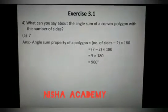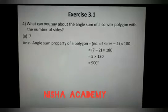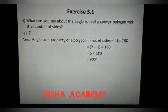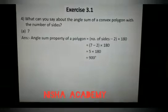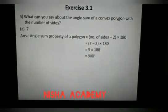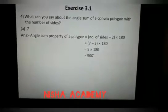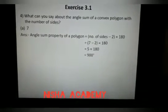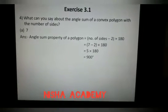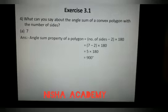Suppose here the number of sides is 7. So the angle sum property of a polygon will be number of sides minus 2 into 180. So 7 minus 2 into 180 will give you 5 into 180 which equals 900 degrees.